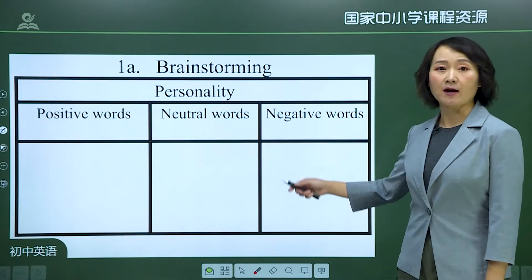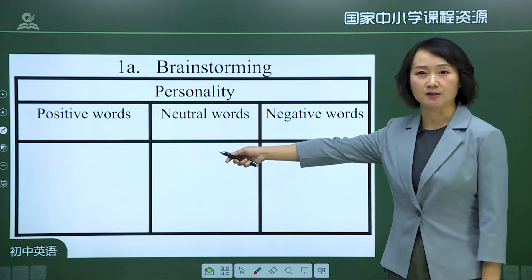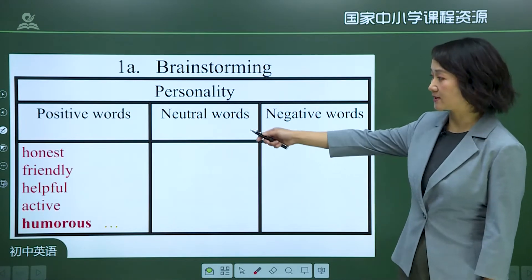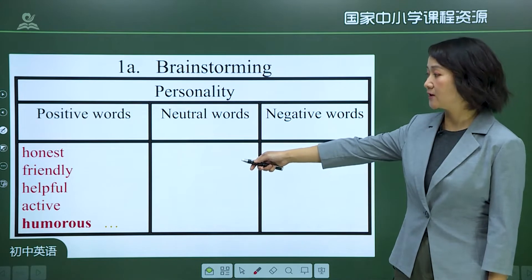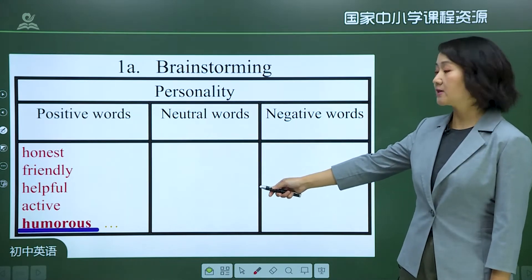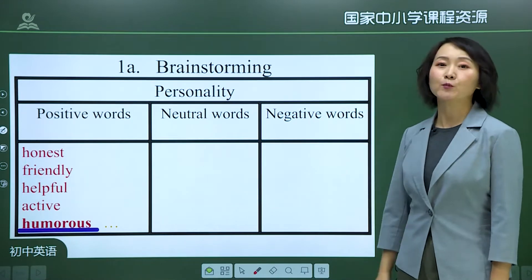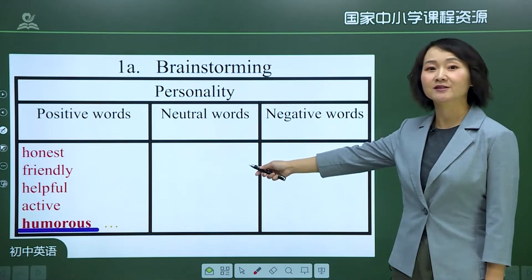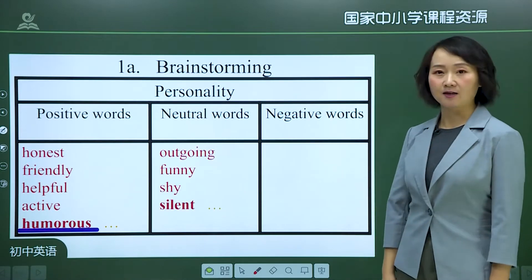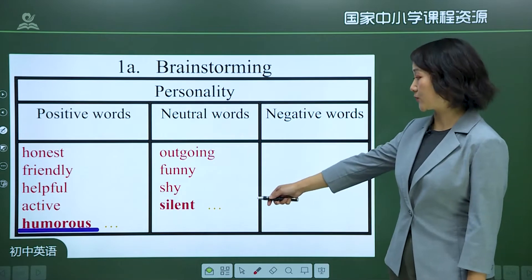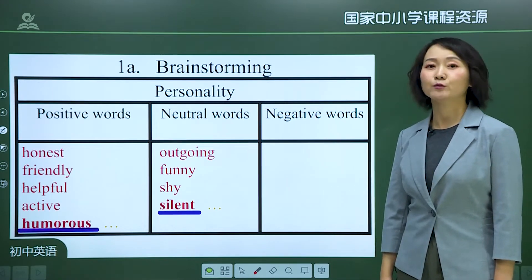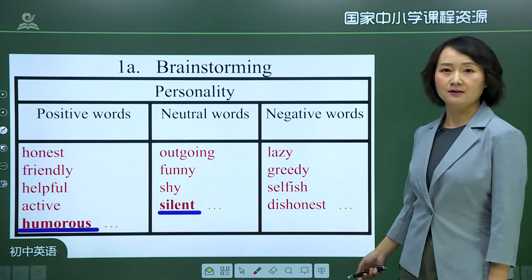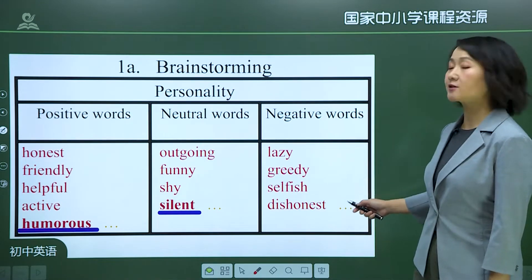When we describe people's personality, positive words include honest, friendly, helpful, active, and humorous — a new word meaning 有幽默感的，滑稽有趣的. Neutral words include outgoing, funny, shy, and silent — another new word meaning 不说话的，沉默的. Negative words include lazy, greedy, selfish, and dishonest.